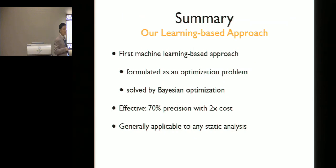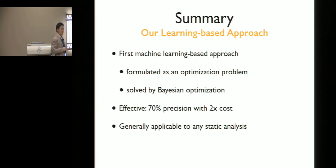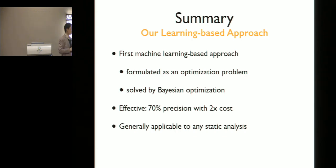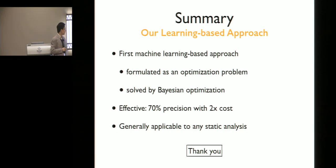To summarize: we presented the first machine learning-based approach for adapting program analysis. We formulate adapting a program analysis as an optimization problem and propose to solve it using Bayesian optimization. Our method is effective and generally applicable to any static analysis. Thank you very much.